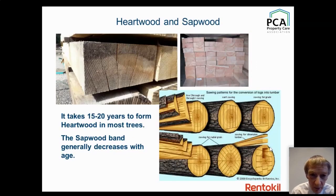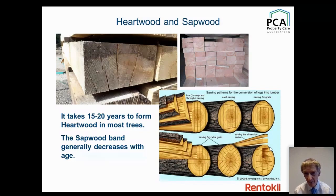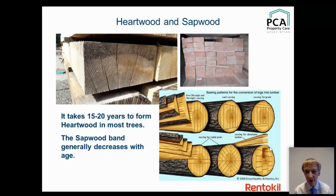So why do we have a problem? Heartwood and sapwood. Heartwood is the dead wood on the inside of the tree; sapwood is the live wood on the outside — and that is what beetle larvae really want to eat. This piece of oak sleeper shows a large band of sapwood. It generally takes 15 to 20 years to form heartwood, so fast-grown conifers felled at 25–30 years have a lot of sapwood.